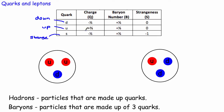As well as charges, we also assign quarks other numbers. All quarks have something called a baryon number, and they've all got a baryon number of plus one third. The strange quark has something extra: a number called strangeness. The down and up quarks are not strange quarks, so they have a strangeness of zero. The strange quark has a strangeness of minus one. All of this data is given on your data sheet in the exam.